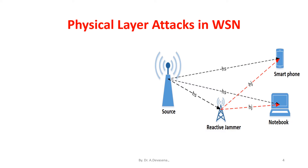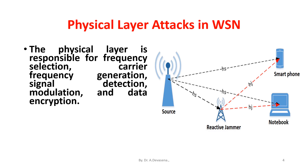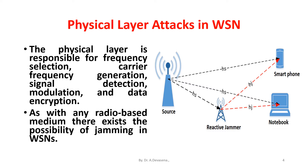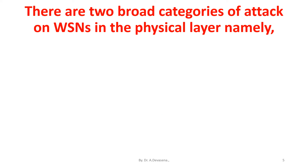Let us start discussing physical layer attacks. The physical layer is responsible for frequency selection, carrier frequency generation, signal detection, modulation, and data encryption. As with radio-based medium, there exists the possibility of jamming in wireless sensor networks. There are two broad categories of attack on wireless sensor networks at the physical layer, namely jamming and tampering.